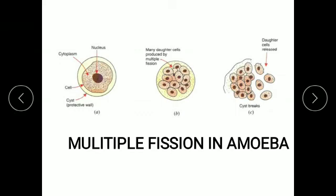This slide shows multiple fission. When conditions are unfavorable, amoeba secretes a hard covering called a cyst around itself. The nucleus divides repeatedly to form many nuclei, followed by division of cytoplasm, forming many daughter cells inside the parent amoeba — or inside the cyst. When favorable conditions return, the cyst bursts releasing the enclosed daughter cells. In this way, one amoeba produces multiple daughter cells, hence we call it multiple fission.